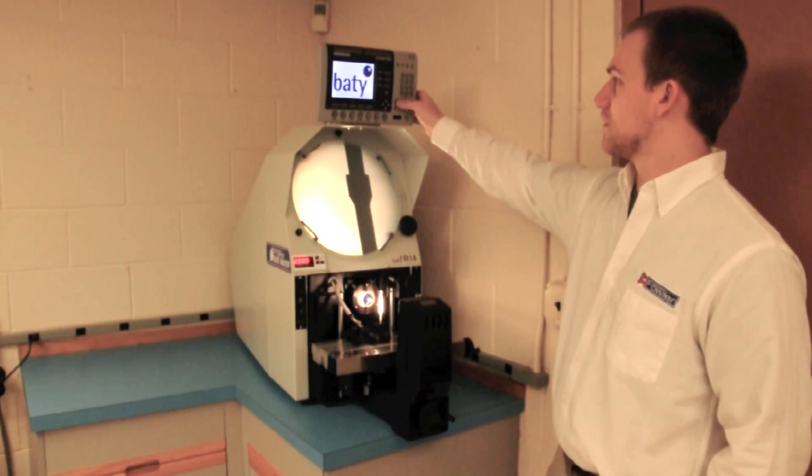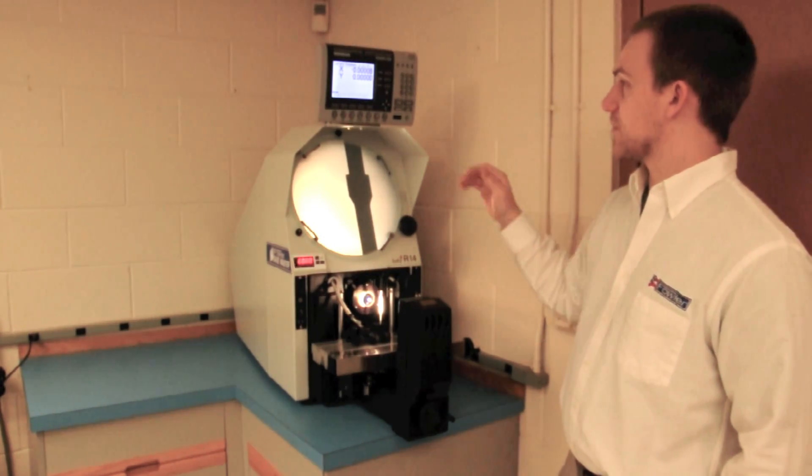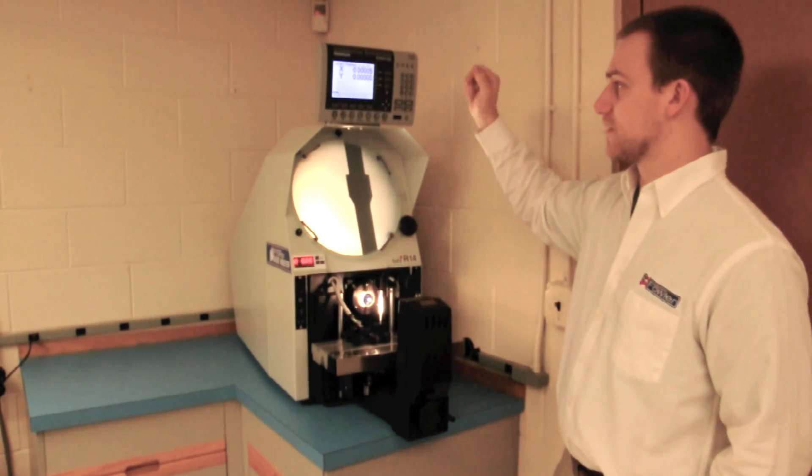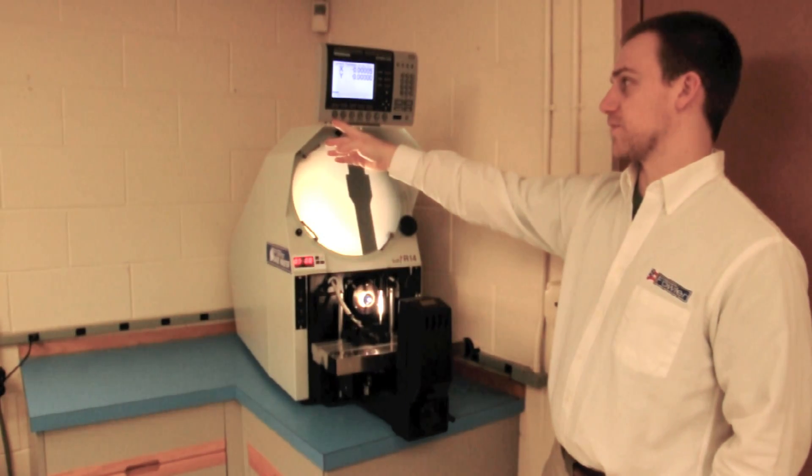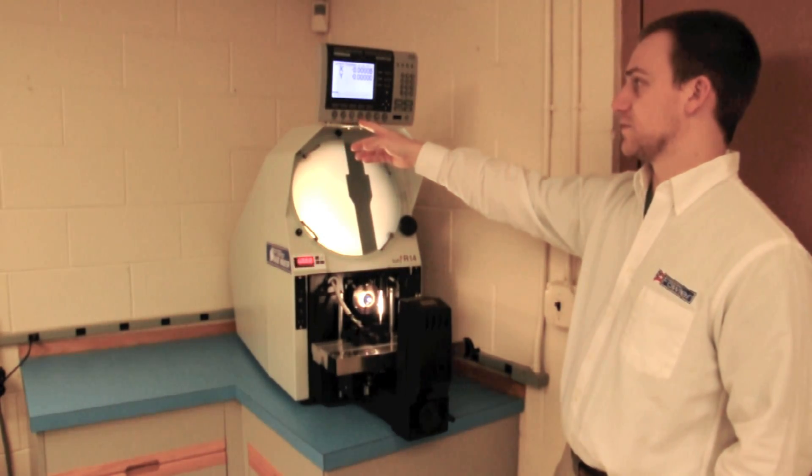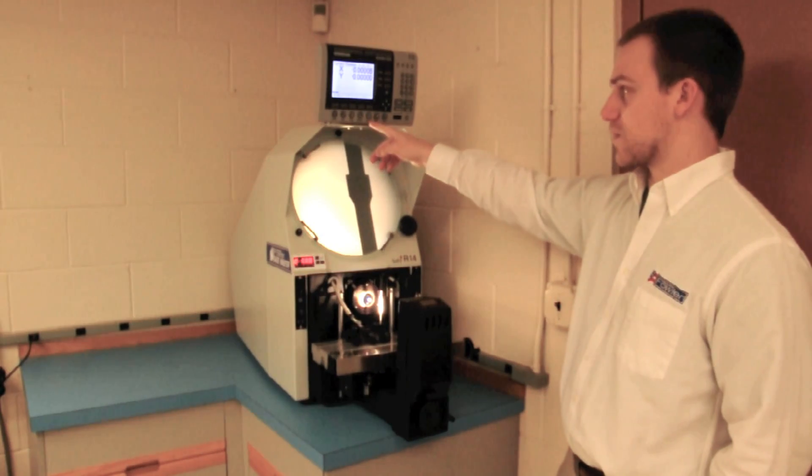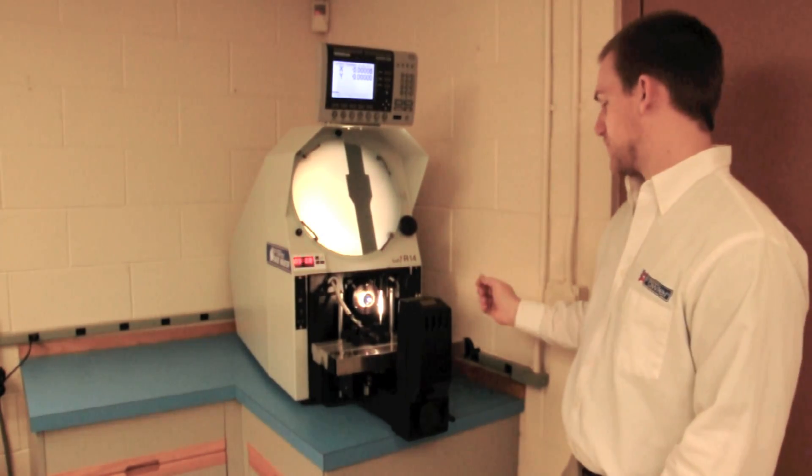The main readout up top has an x and a y counter. It also does features. It can count from a single point. It can measure a line, a circle, a point-to-point distance, or an angle. We'll run it through an angle measurement right now.